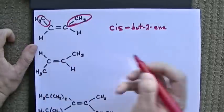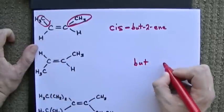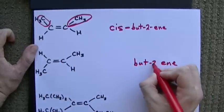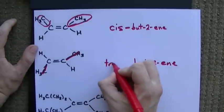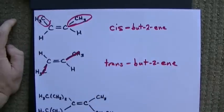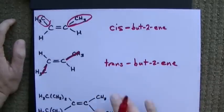One, two, three, four carbon chain with a double bond starting at carbon two. And the two highest precedence groups are across each other from the double bond. Trans-but-two-ene.